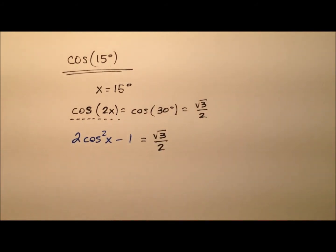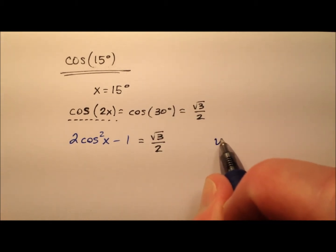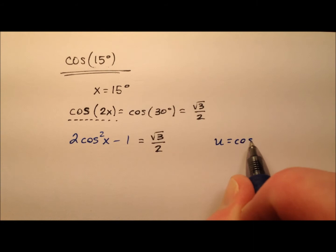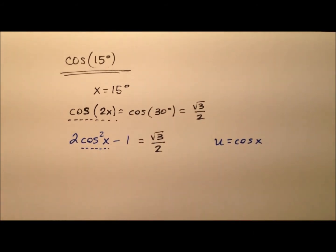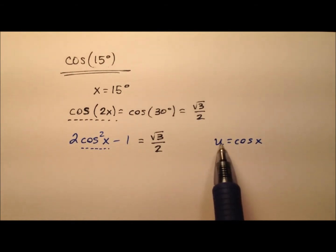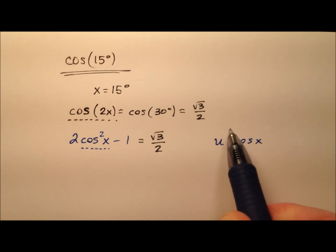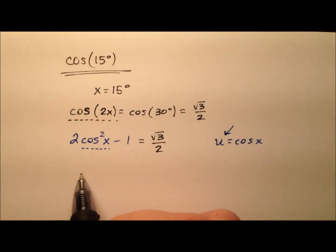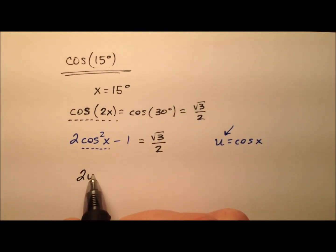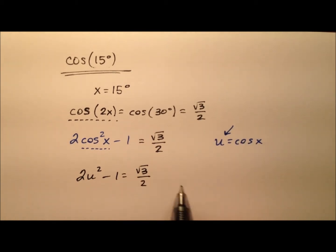One more little substitution I want to make — I'm going to make a u substitution. I'm going to say u equals the cosine of x, because right here we have the cosine of x being squared. So u will be the cosine of x, and since x is 15 degrees, when we solve for u we'll be solving for the cosine of 15 degrees. So let's make that exchange: it'll be 2u squared minus one equals the square root of three over two.